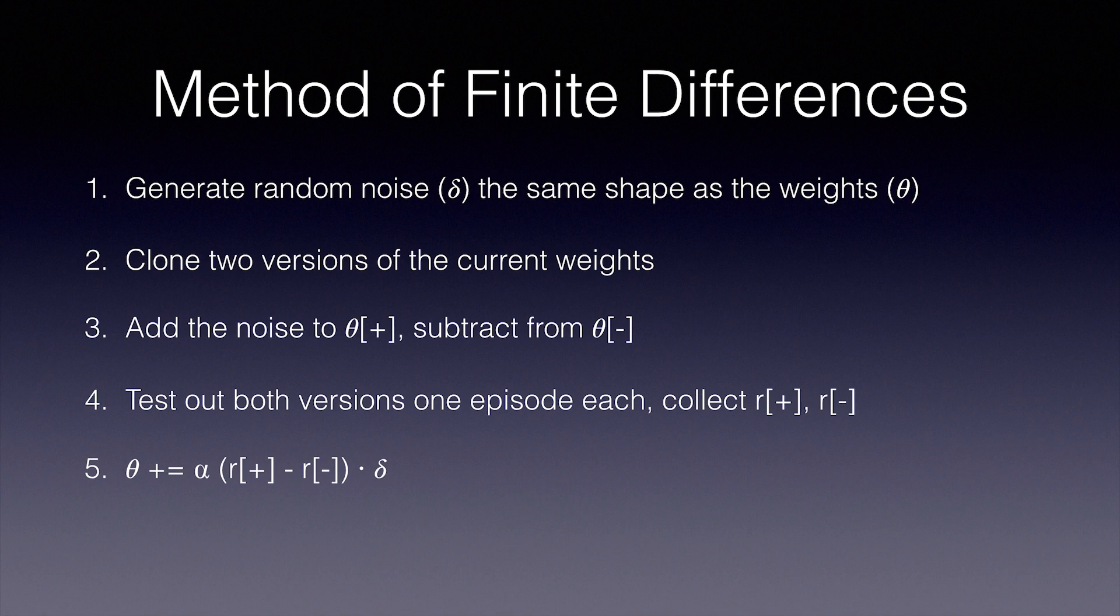Weights plus equals learning rate, or alpha, times rewards positive minus rewards negative, times delta. Step six, repeat the above until we've reached the desired performance.